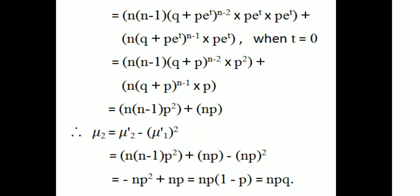After calculation and evaluating at t equal to 0, we get n times n minus 1 times p squared plus np. Simplifying: n squared p minus np squared plus np, which equals np times 1 minus p. Since 1 minus p equals q, the variance equals npq.